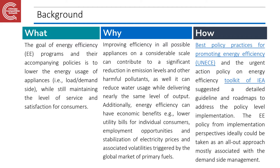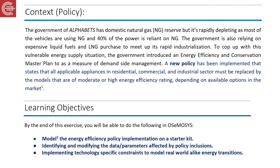Now let's prepare an example policy of a superficial country and gradually translate the qualitative policy salient features into quantitative parameters. In this part, we are analyzing an example policy of a country named Alphabets. The government of this country is facing scarcity of primary energy resources and trying to reduce their reliance on imported energy supply. Let's pause the video and have a look at the policy.